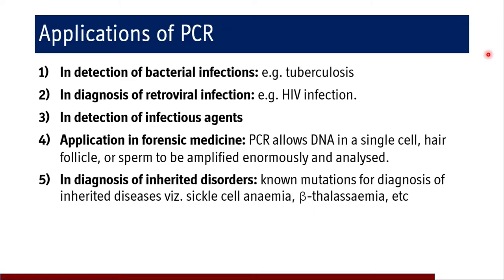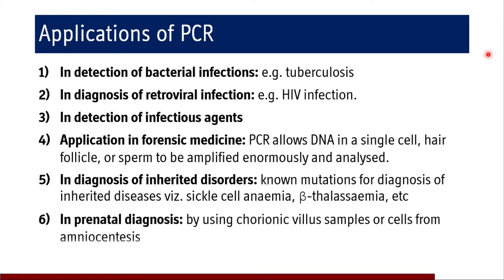In diagnosis of inherited disorders also we use PCR. Known mutations for diagnosis of inherited disorders like sickle cell anemia and beta thalassemia can be detected — PCR is used for that.